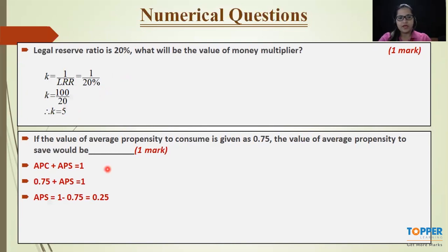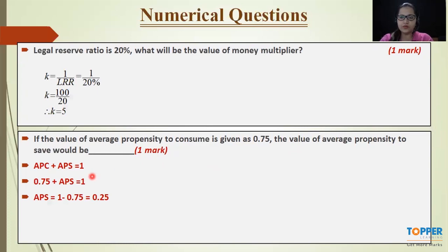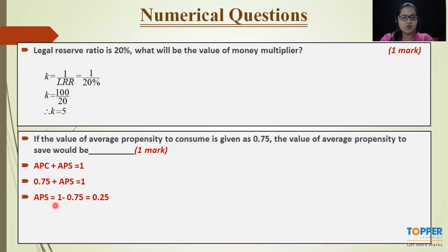Coming to the second question: the value of average propensity to consume (APC) is given as 0.75, and the value of average propensity to save (APS) needs to be calculated. We know that APC plus APS equals 1. Putting the value in the formula: APS equals 1 minus 0.75, which gives APS as 0.25.